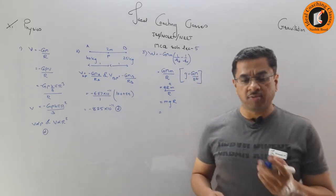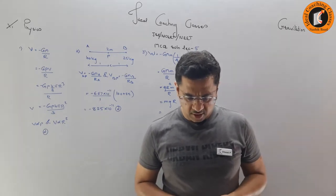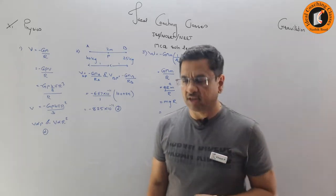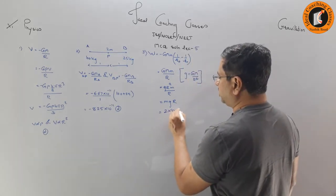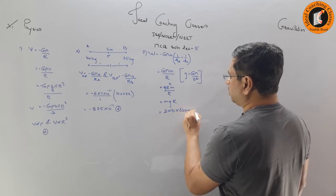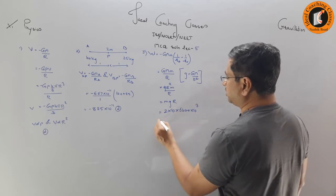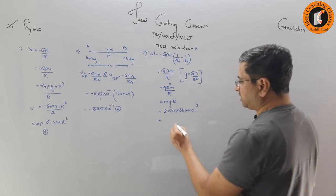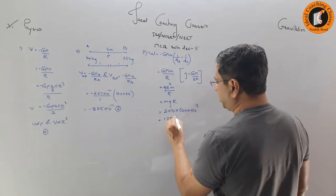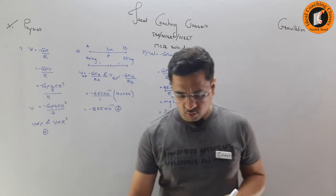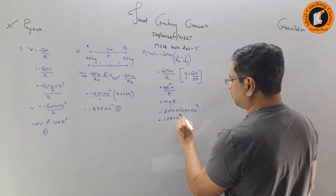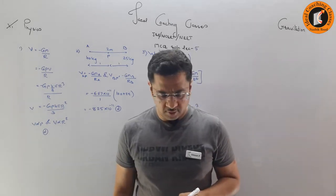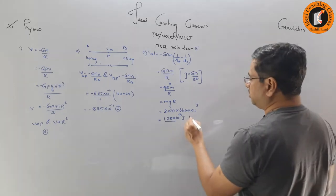This is the potential energy formula. With g = 10, r = 6400 km, and mass = 2 kg: work done = 2 × 10 × 6400 × 10³ = 1.28 × 10⁸ joules. The answer is 1.28 × 10⁸ joules, which is the second option, option B.